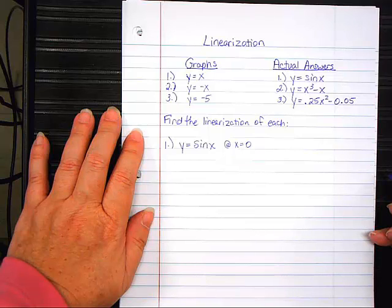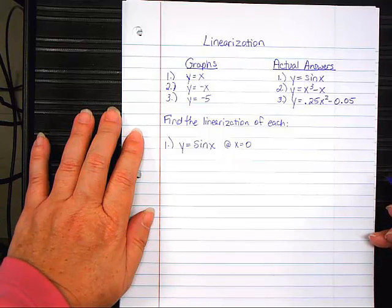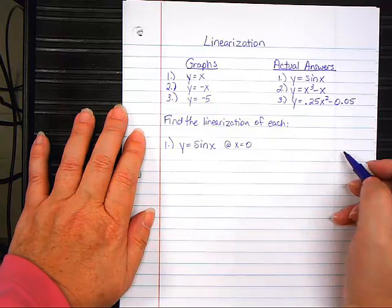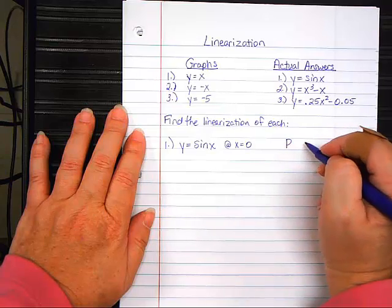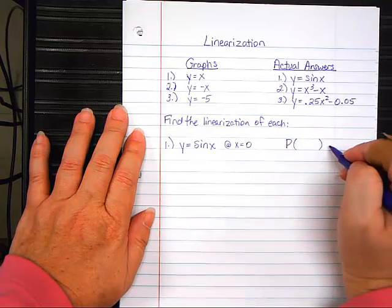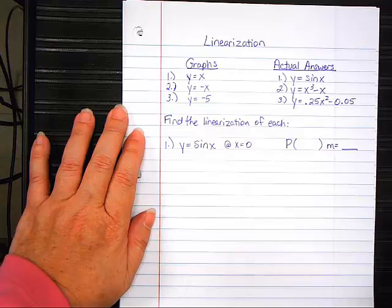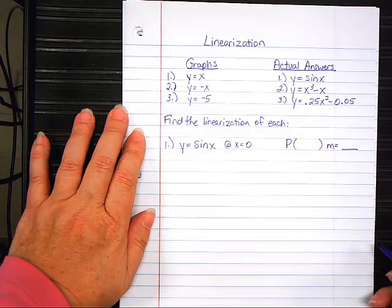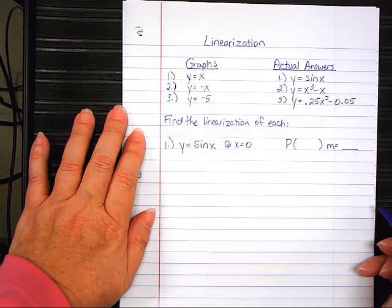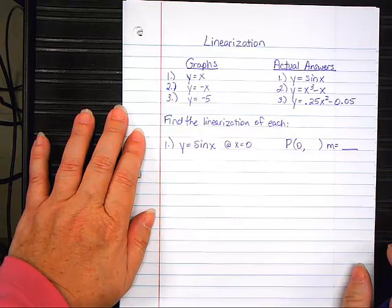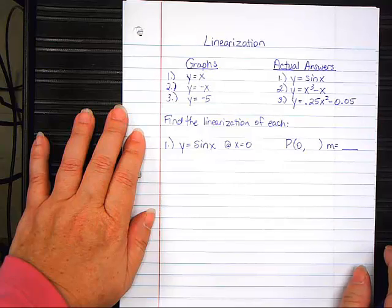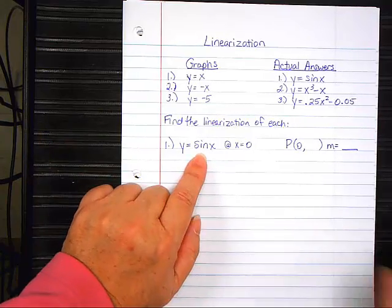Now, how did we find the equation of a tangent line before? What are the two pieces of information we need to write the equation of a line? We need a point and a slope. Right? So, I'm going to write that out to the side. We're going to go at it this way. What do I know already? I know X is zero.